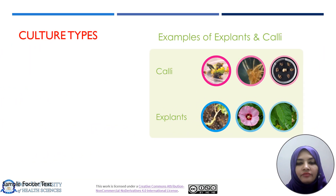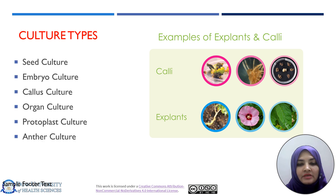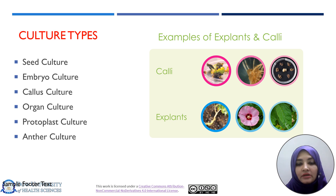Here are different types of cultures that can be used during in vitro propagation technique, all having specific requirements. These will be discussed: seed culture, embryo culture, callus culture, organ culture, protoplast culture, and anther culture. All these culture types have specific conditions and requirements.